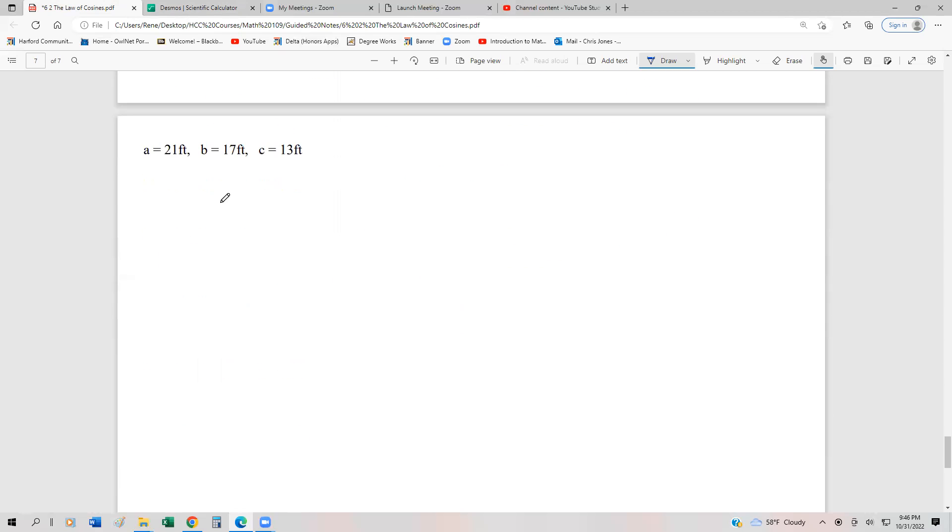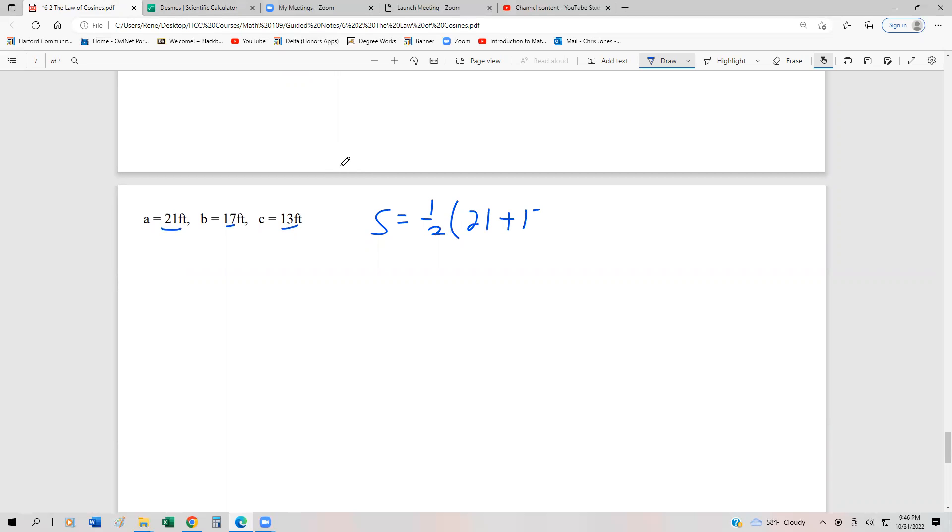A second example. So we have side 21, side 17, and side 13. And so first of all, we're going to find S, which again is half the perimeter. So half of 21 plus 17 plus 13. That's going to be half of 51, so that should be 25.5.